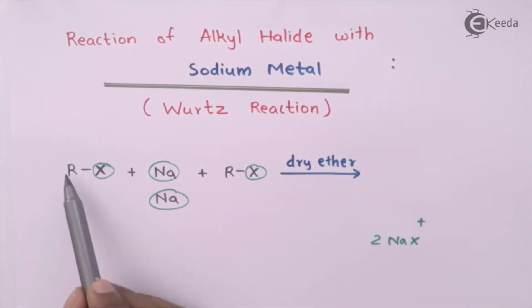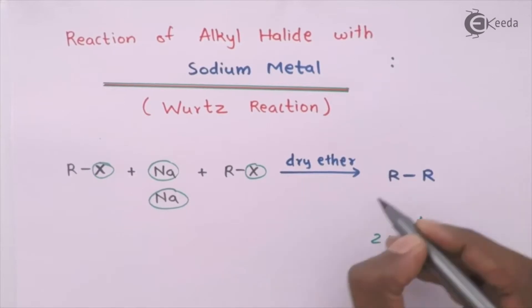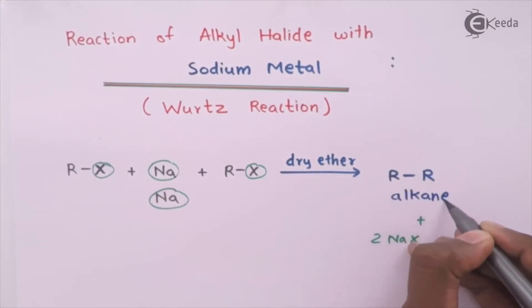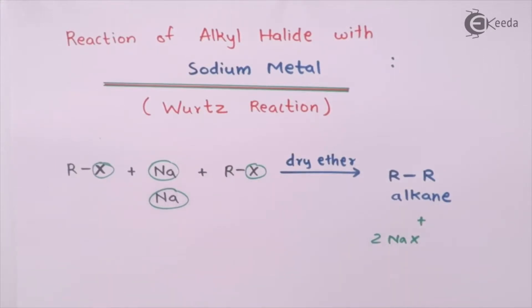As a result, we obtain 2 moles of NaX as the byproduct. What is left are the two R (alkyl) groups, which combine to give a higher alkane. For example, if we use methyl chloride reacting with sodium metal and another mole of methyl chloride in the presence of dry ether, we get ethane and 2 moles of NaCl as byproduct. To obtain higher alkanes via the Wurtz reaction, both R groups must be the same.